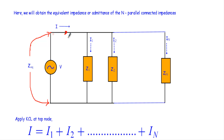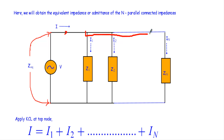Let's say the total or equivalent impedance is Z equivalent, measured with respect to the two terminals. Since this is a parallel circuit, the voltage across each branch is V, but the total current I divides into I1, I2, up to In. This node is where the current divides.